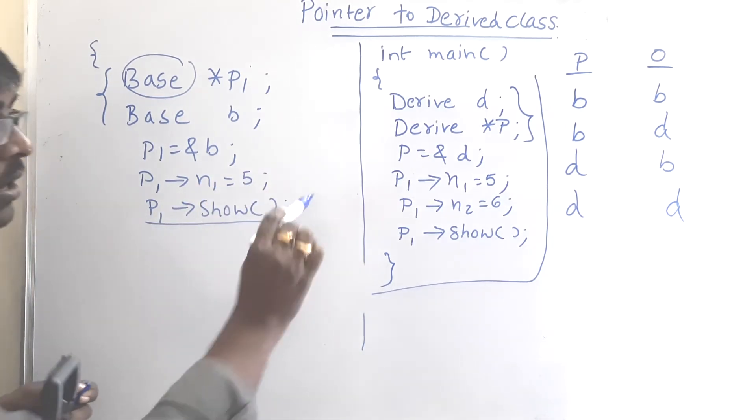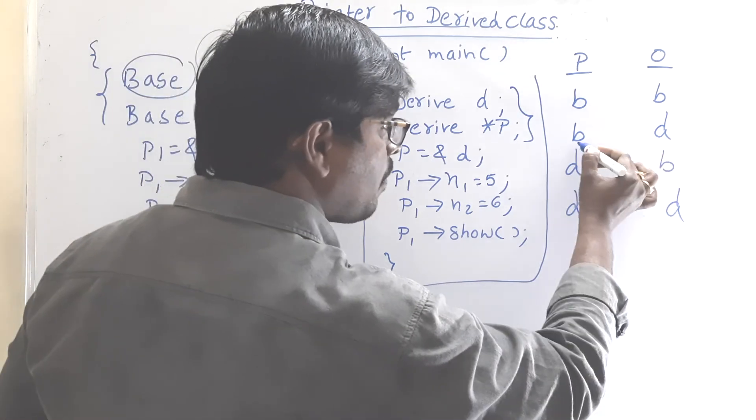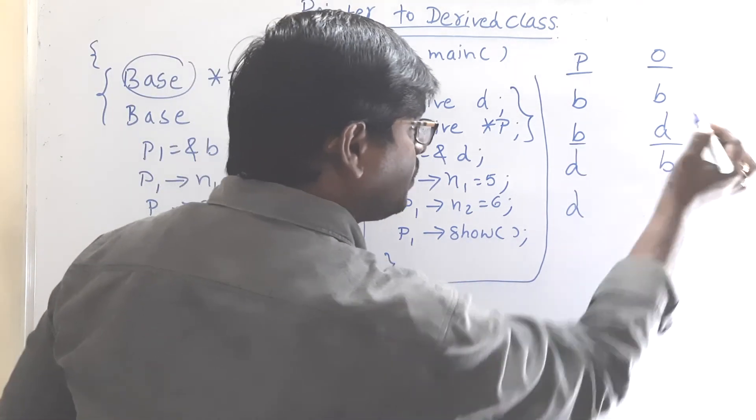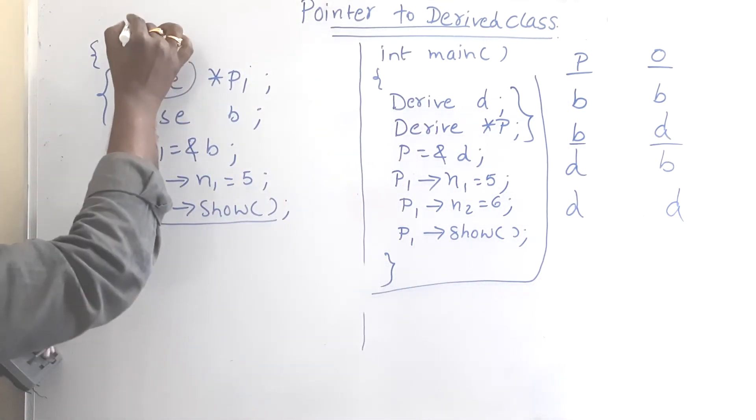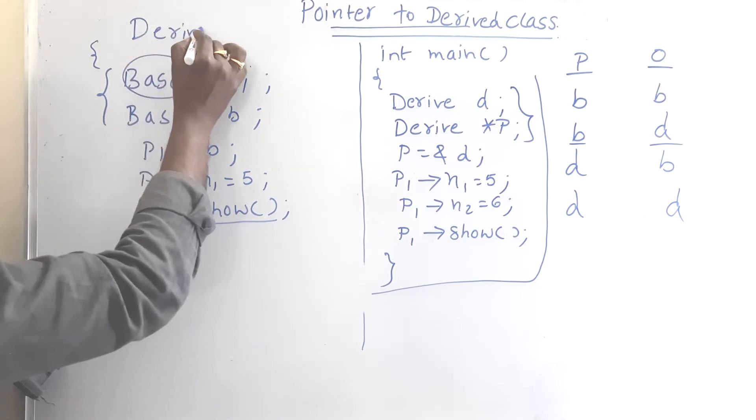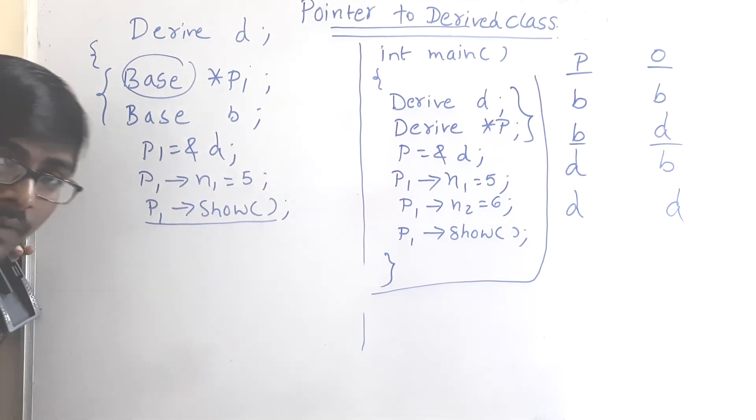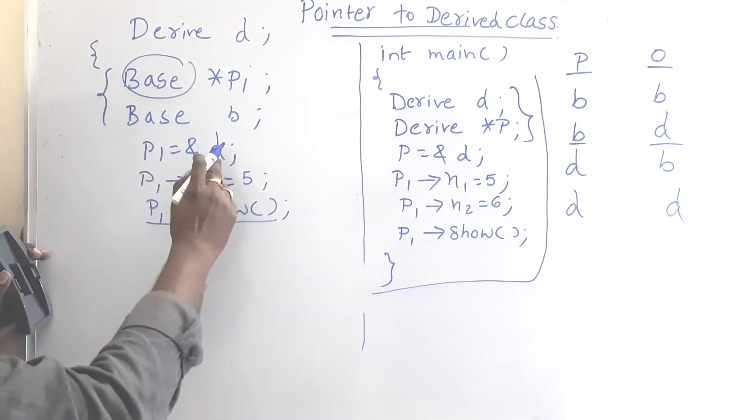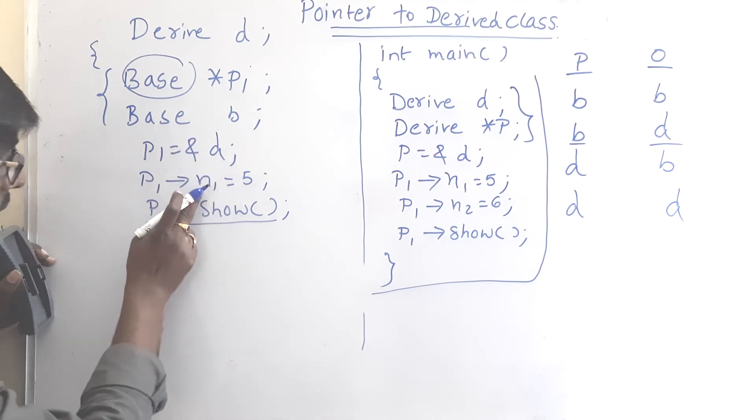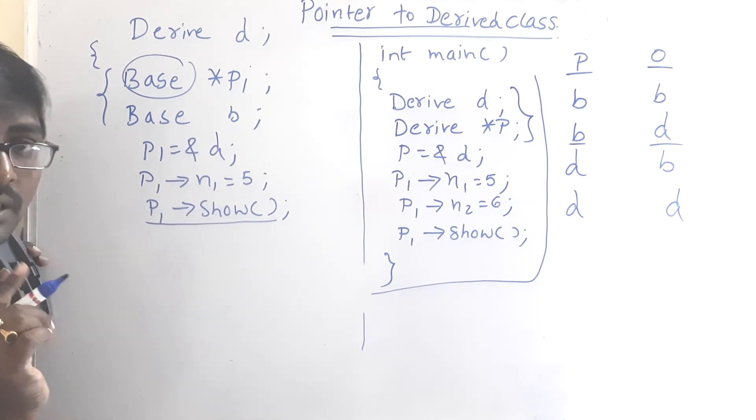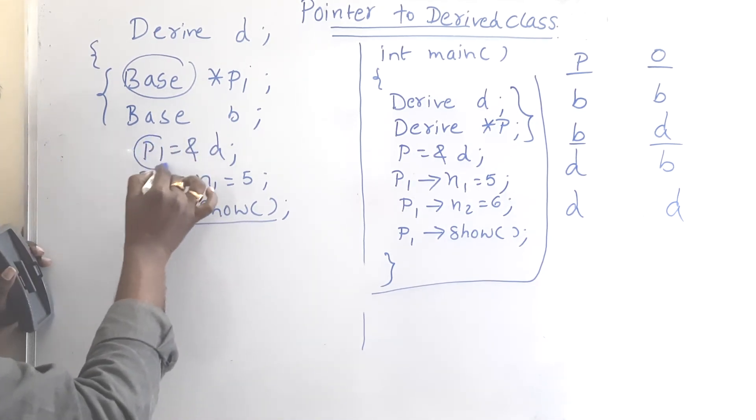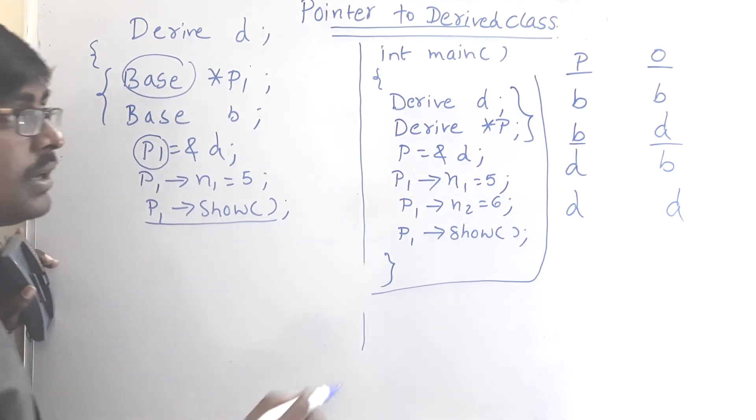Coming to second one. What is the second case? Pointer is base, object is derived. For example derive d. Here p1 stores address of d. In this case also we can access base class method. Why? It mainly depends on the pointer.